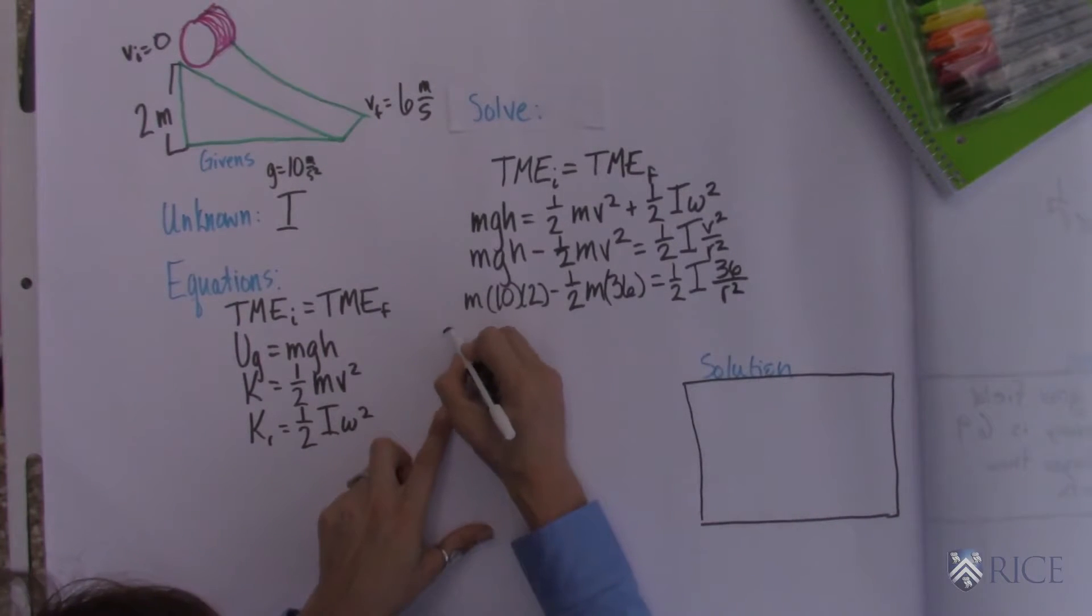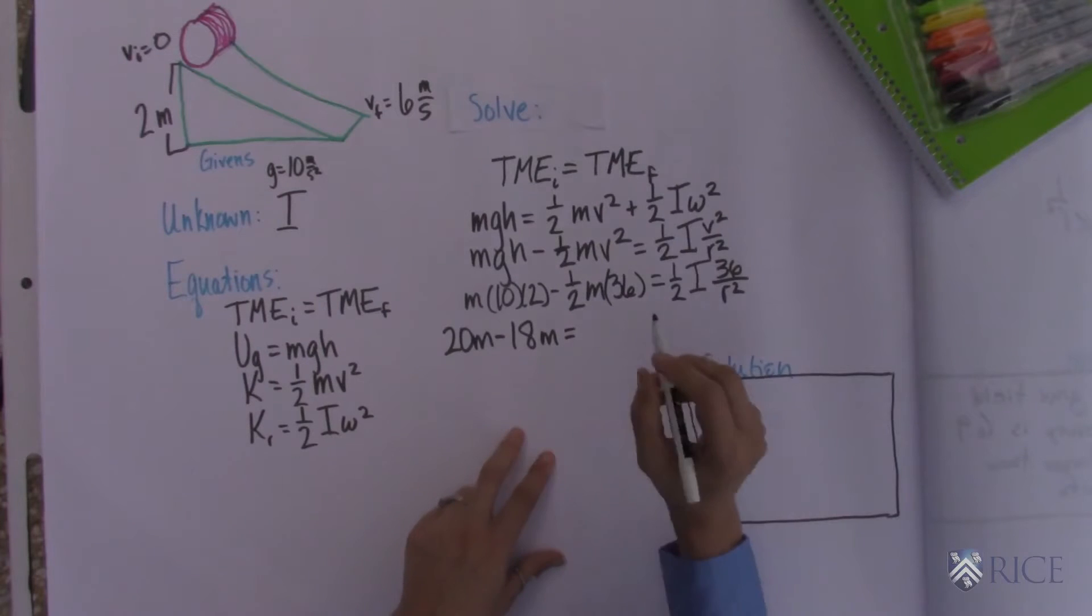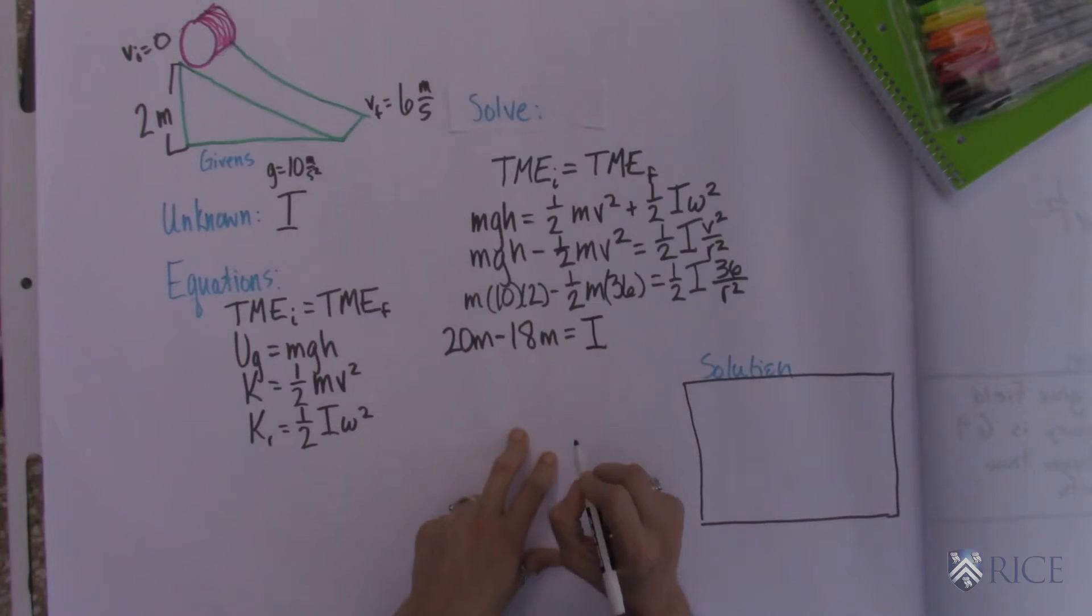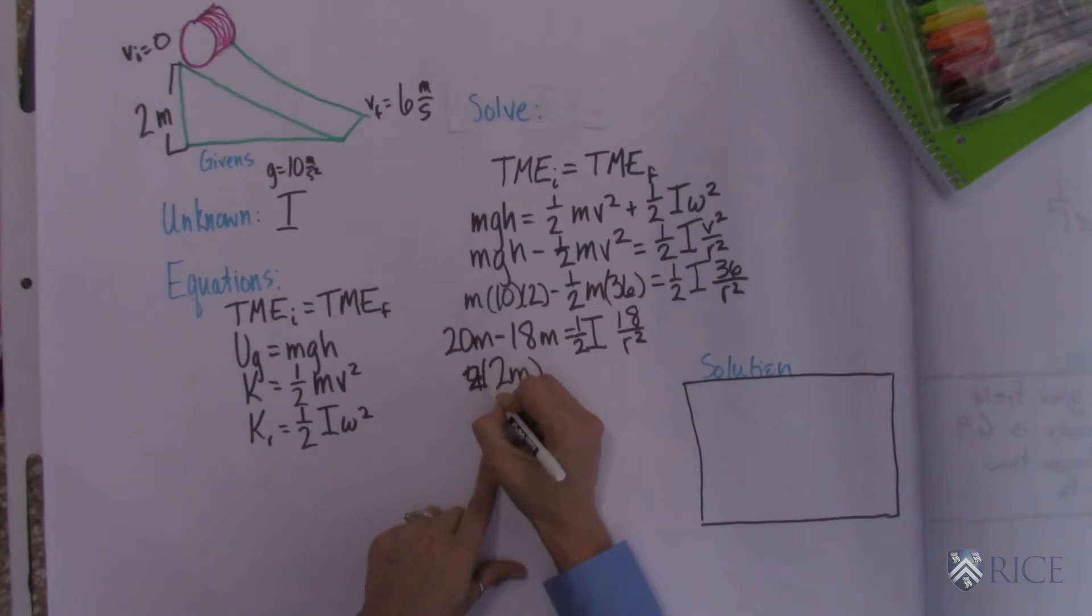So this is kind of messy. Let's go 20m minus 18m is equal to i times 18 over r squared. We're going to solve for r. 2m. Oop. I forgot my 1 half there. 4 times 2 equals i times 18 over r squared.